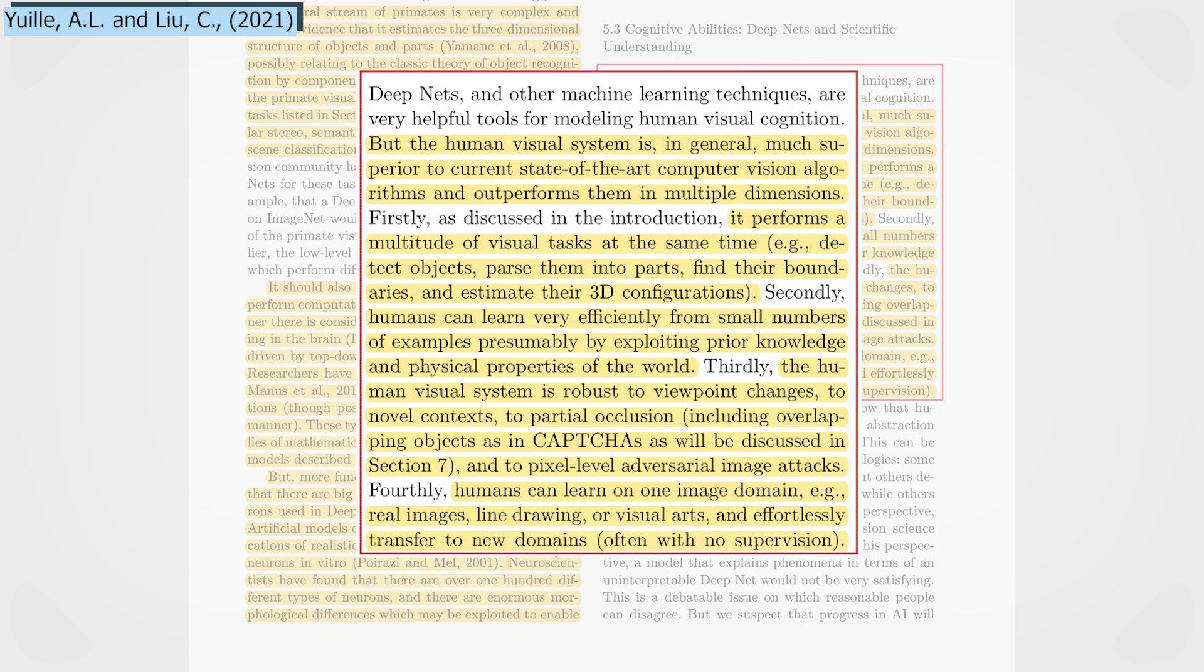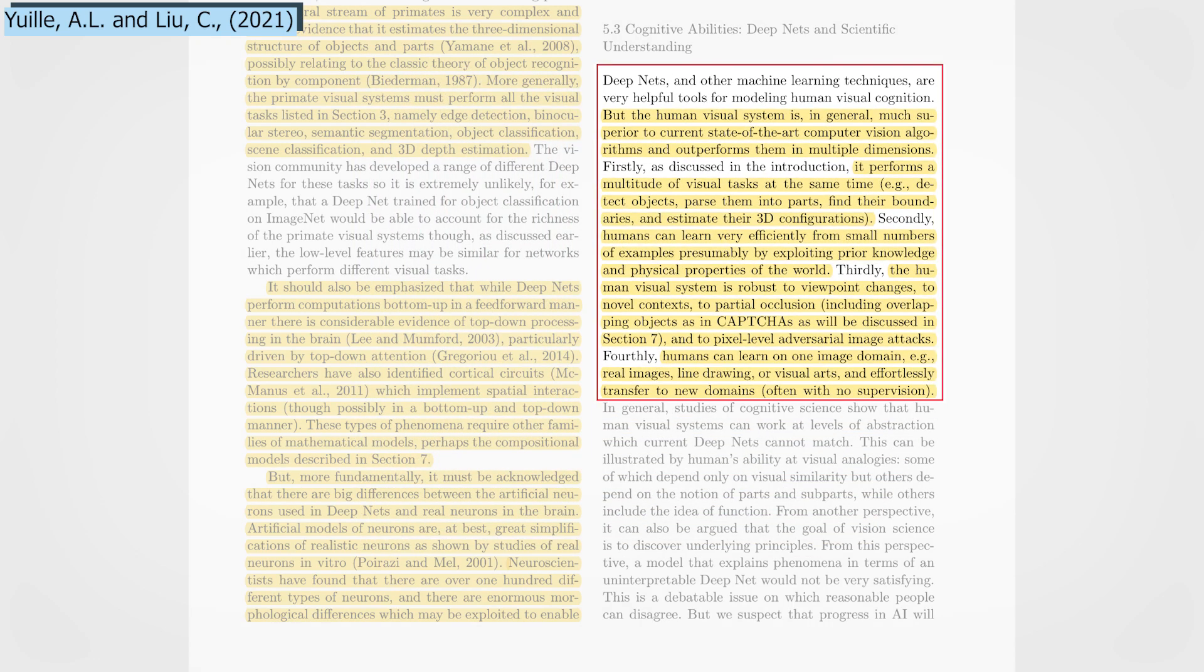Indeed, current deep nets are surprisingly different than our own vision system. Firstly, humans can learn from very small numbers of examples by exploiting our memory and the knowledge we already acquired. We can also exploit our understanding of the world and its physical properties to make deductions, something that a deep net cannot do.